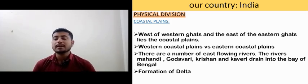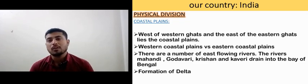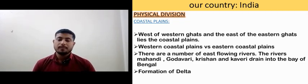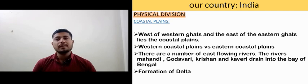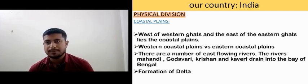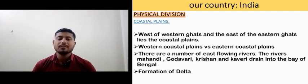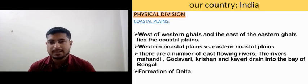There are a number of east-flowing rivers — the Godavari, Krishna, and Cauvery — which drain into the Bay of Bengal and lead to the formation of deltas.